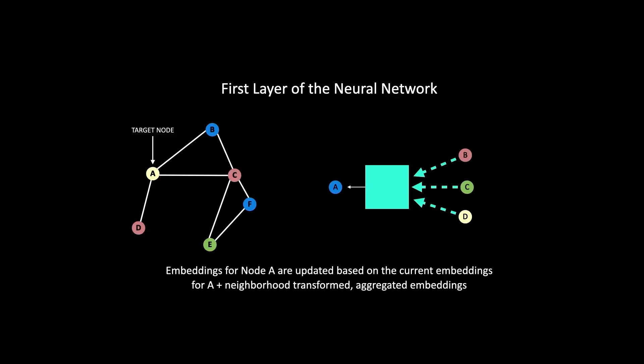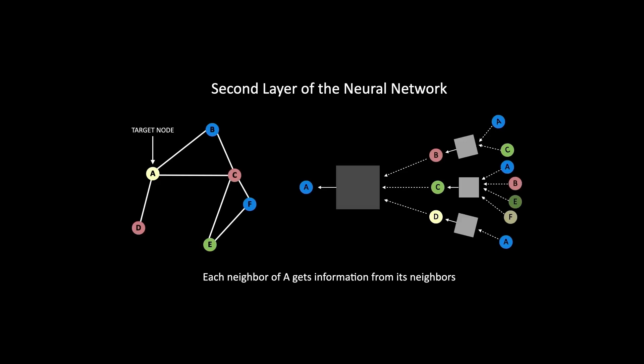For every target node, in the first layer of the neural network, you only get information from its immediate neighbors. In the second layer, each neighbor of A will get information from its other neighbors. The immediate neighbors of A are B, C, and D. The immediate neighbors of node B are A and C. Node C's neighbors are A, B, E, and F. And for node D, node A is the only immediate neighbor.